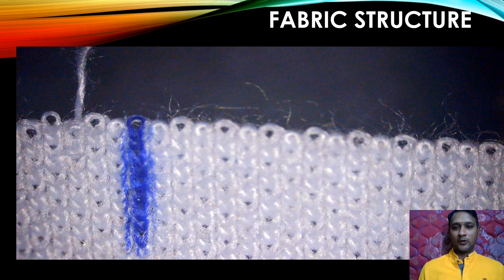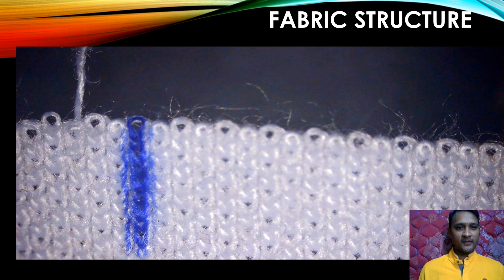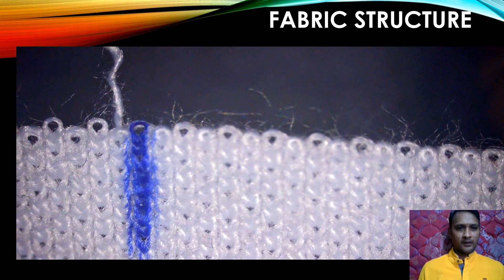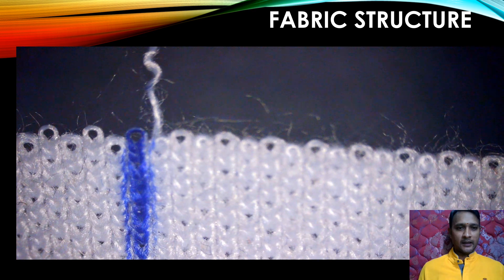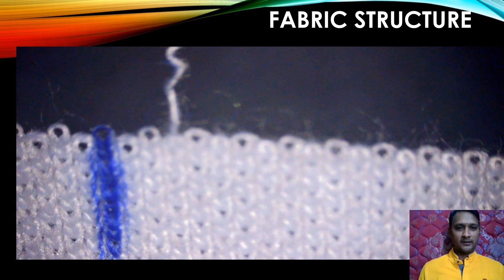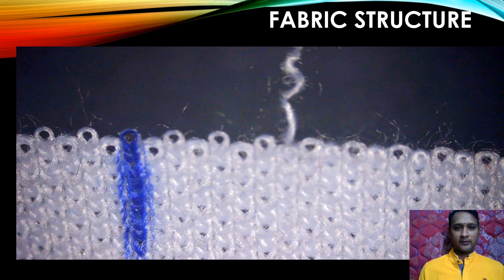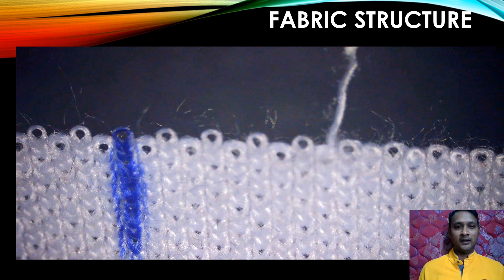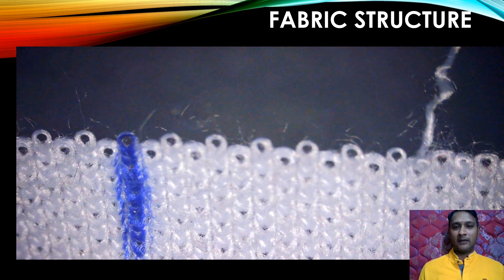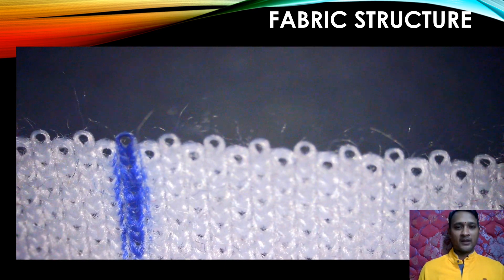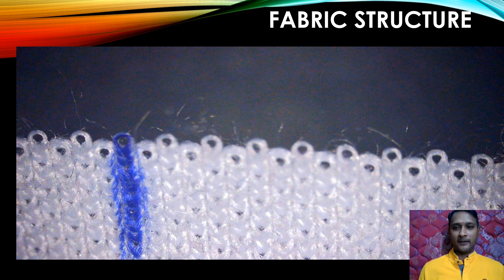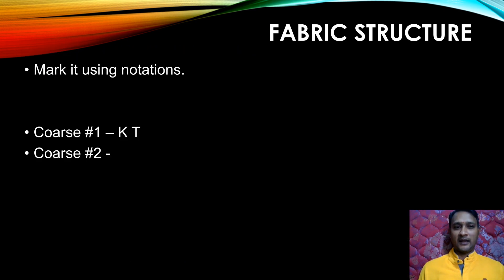I am going to unravel course number 1. After that vertical line, I could see knit followed by tuck, knit, knit followed by tuck. I could see the half moon structure in the second needle on top of, just overlapping the previously knitted loop. So, we can finalize the course number 1 as knit tuck, following the usual notation technique for the structure.